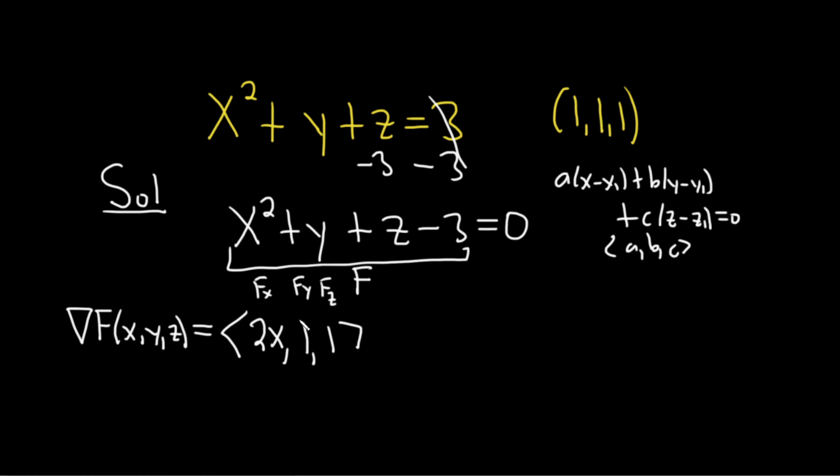So when you find the partial with respect to y, the derivative of y is 1 and the derivative of everything else is 0 because it's all constants. When you find the partial with respect to z, the derivative of z is 1 and the derivative of everything else is 0 because you treat them as constants.